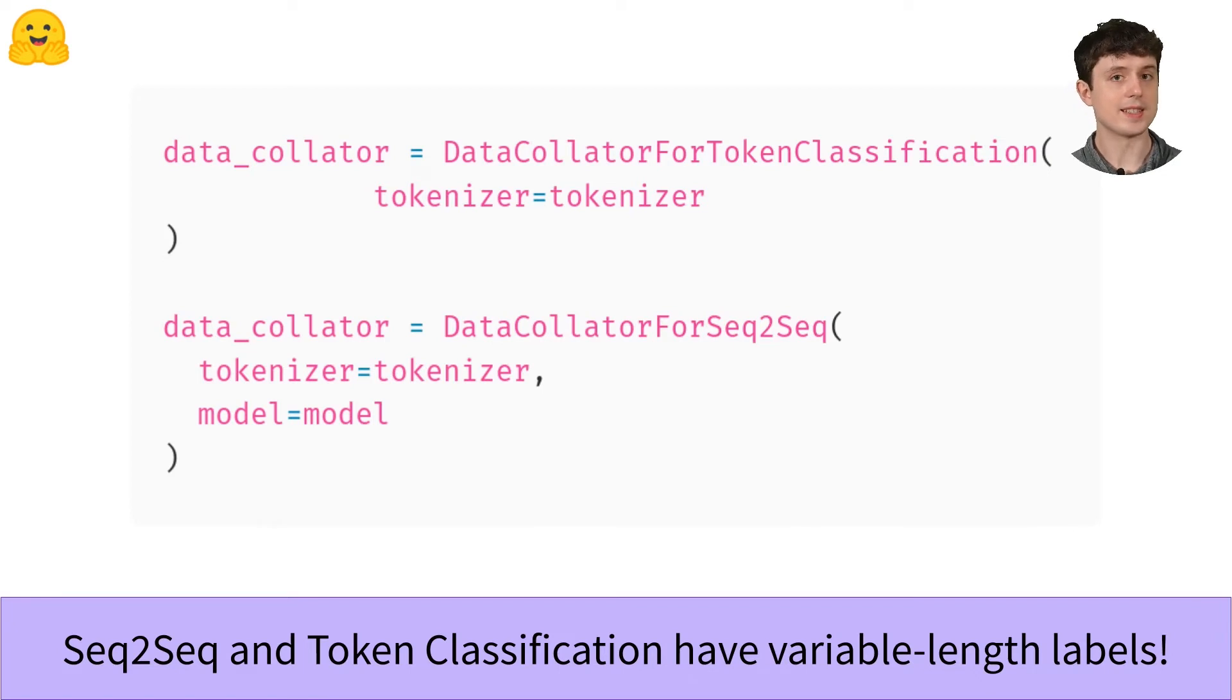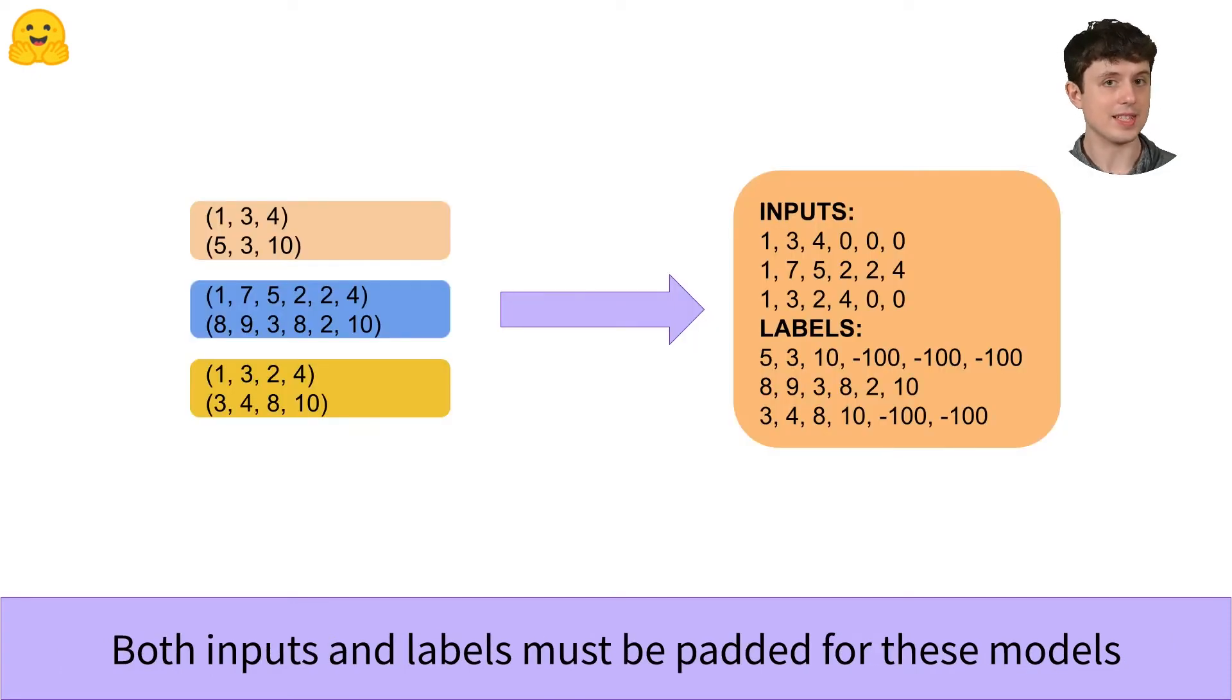And the reason these tasks need special collators is because their labels are variable in length. In token classification there's one label for each token and so the length of the labels is the length of the sequence. While in seq2seq, the labels are a sequence of tokens that can be a variable length that can be very different from the length of the input sequence.